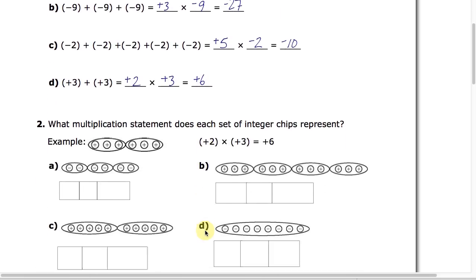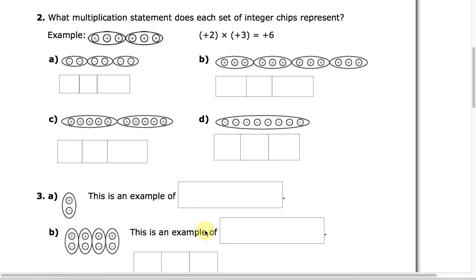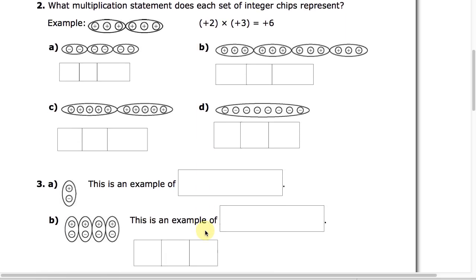That's the basic idea with multiplication. Now to look at a different representation: we are asking what multiplication statement does each set of integer chips represent? Just so you know, on a photocopied handout being black and white, it's always indicated whether chips are positive or negative. In the textbook, positive chips are shaded red and negative ones are blue, so there may not be a plus and minus sign on the chips.